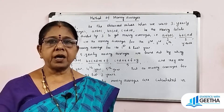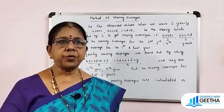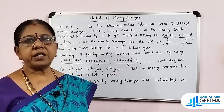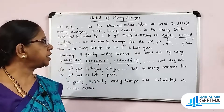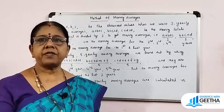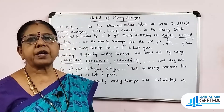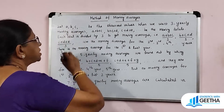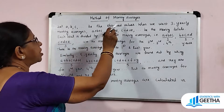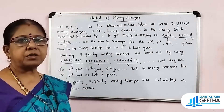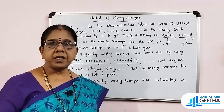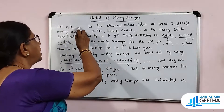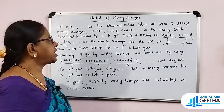Now if you look at the moving averages method, it includes 3-yearly, or 5-yearly, or 7-yearly, or 9-yearly moving averages. Let us consider A, B, C, etc. to be the observed values — that is what we observe in the time series data.